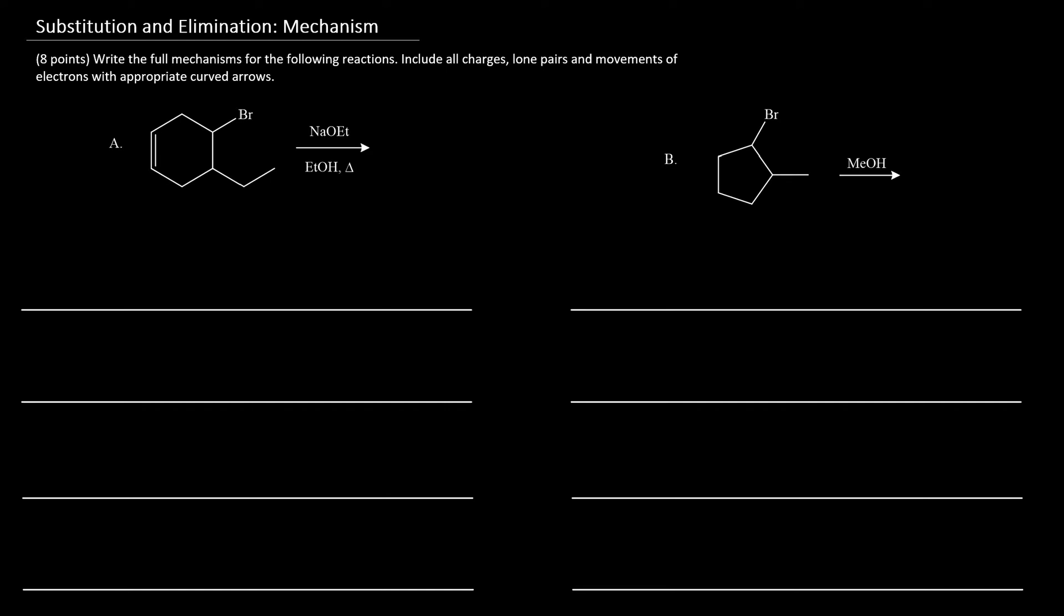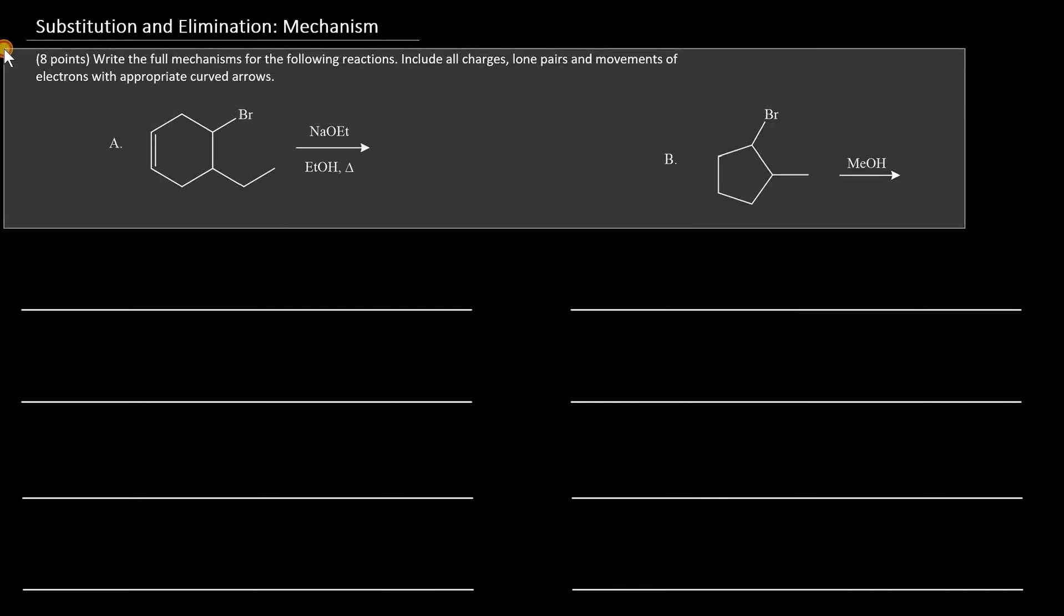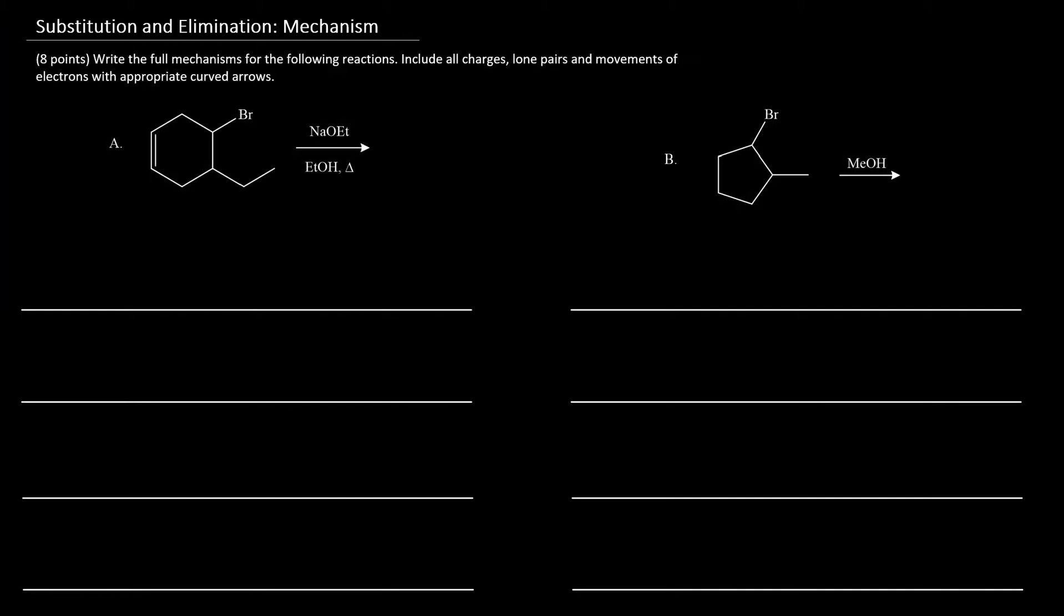These two mechanisms involve substitution and elimination. That's already a clue in and of itself, because on the exam, only this much information is given. So, with SN1, SN2, E1, E2, we need to look at all of our clues in order to determine the pathway for the reaction.